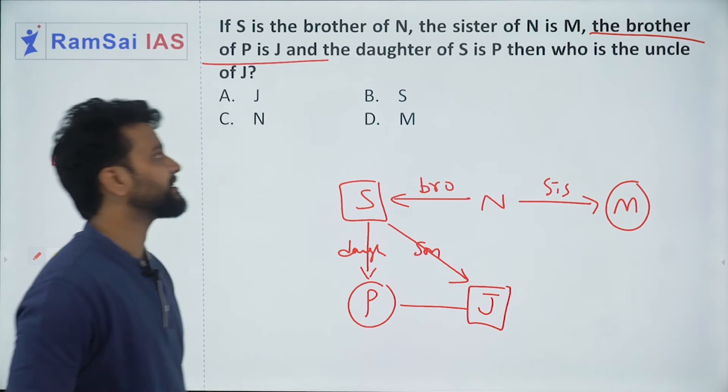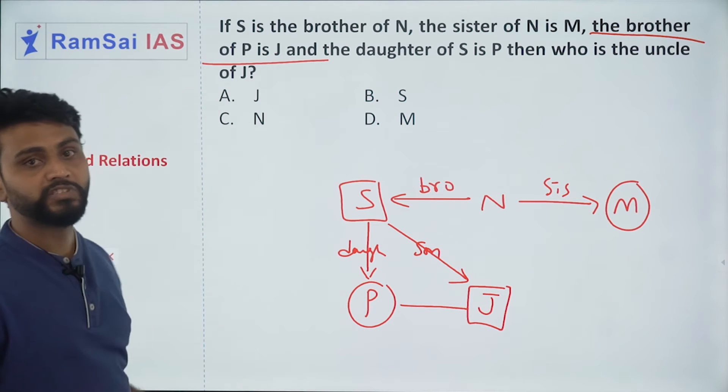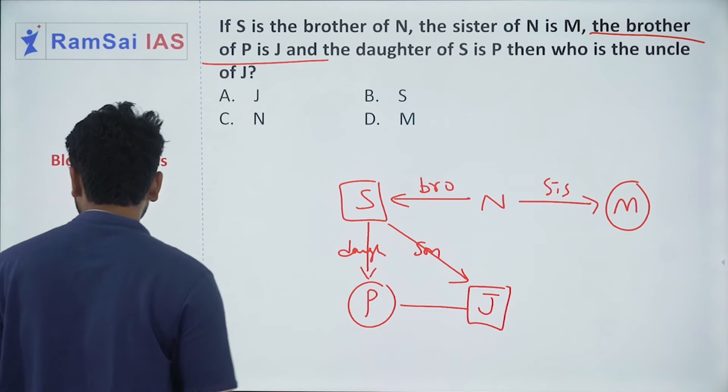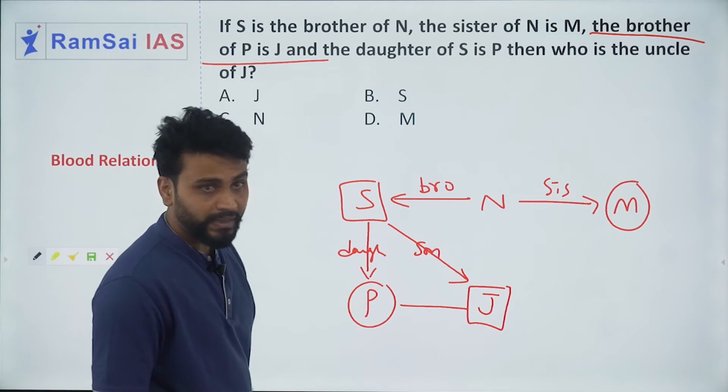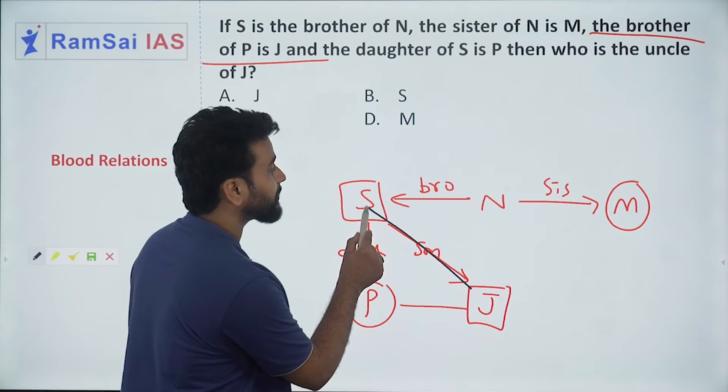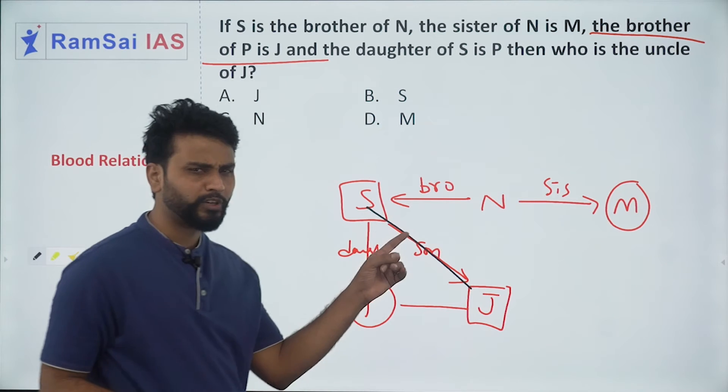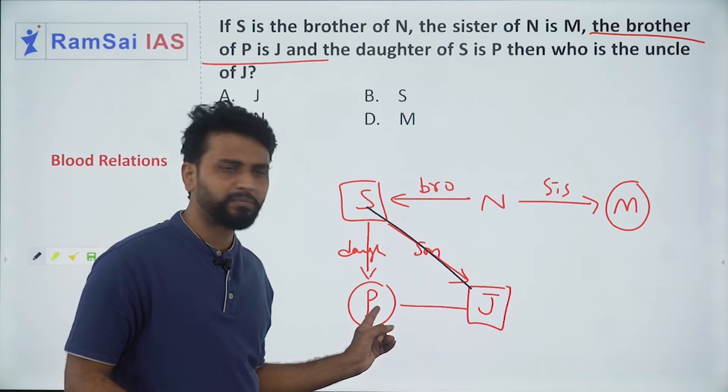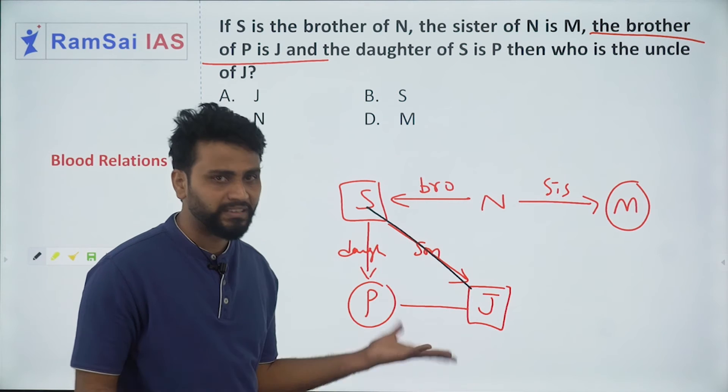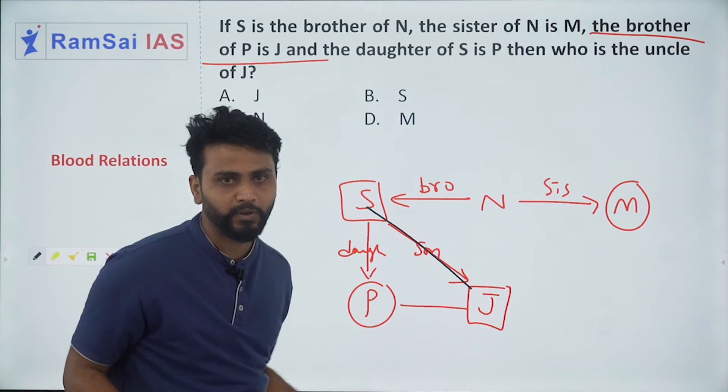Now, the question is, who is uncle of J? Uncle means father's brother. But here, do you know who is mother of J or P? No, it was not mentioned. So I am not going to bother about it.